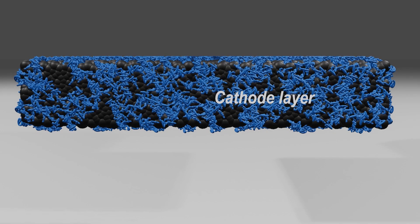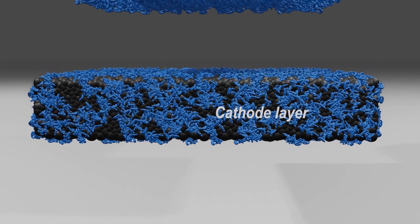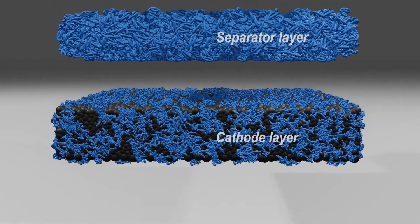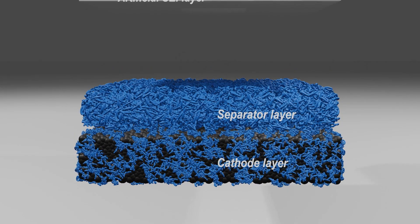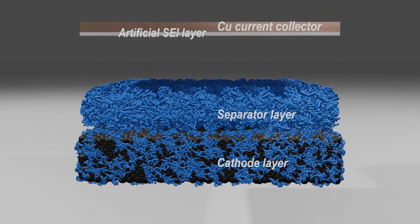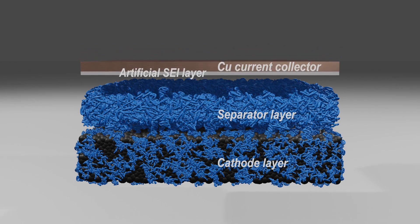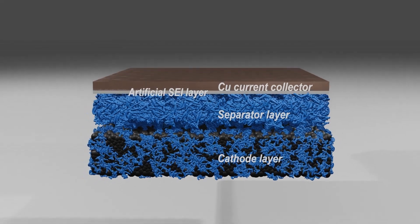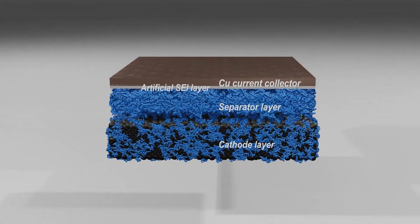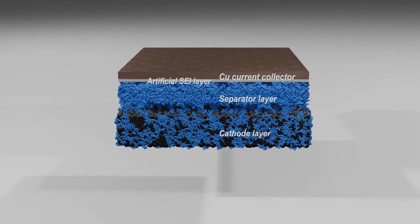When the epoxy composition is coated on the cathode material mixture layer formed in this way and cured, a solid separator made of polymer electrolyte is formed. Again, by attaching a copper current collector foil coated with a protective film on top of it and raising the temperature, an anode-free solid-state battery is completed. If the temperature is further raised in the pressurized state, each interface is bonded and the adhesion between each layer is strengthened.